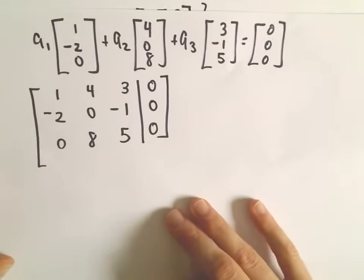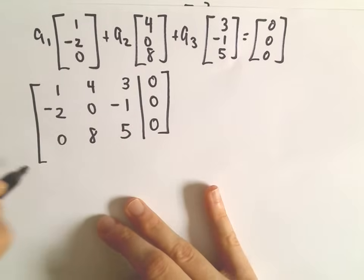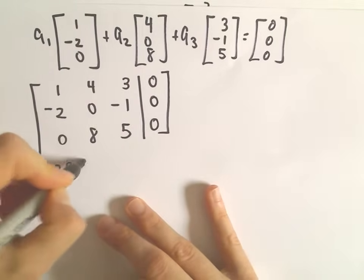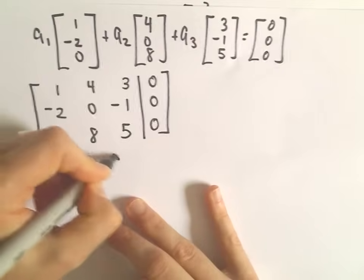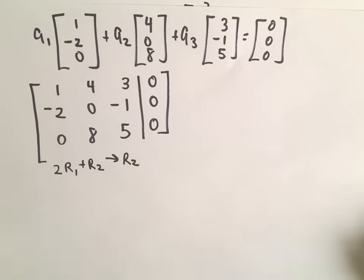So now, again, we're just going to try to put this in our reduced echelon form. So I'm going to do 2 times row 1, add that to row 2 to get my new row 2. And ultimately, all we're doing is we're just trying to decide if we have trivial or non-trivial solutions. So that's where we're headed.